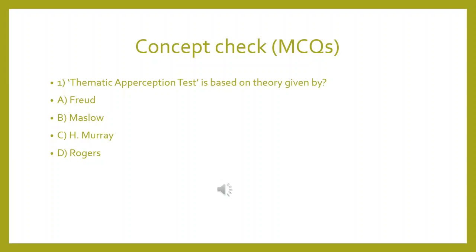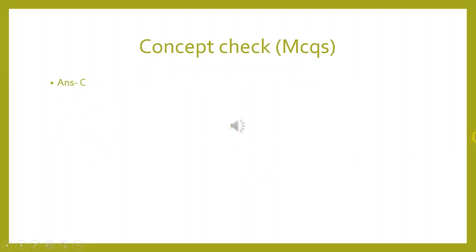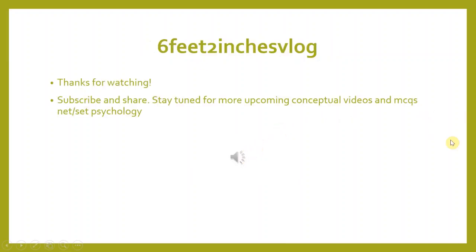Now for the concept check MCQ: 'The Thematic Apperception Test is based on the theory given by — options are: A) Freud, B) Maslow, C) H. Murray, D) Rogers.' Please pause the video, try to answer, and then check the next slide. The correct answer is C, H. Murray. Thanks for watching — please subscribe, share the video with friends, and stay tuned for upcoming conceptual videos related to NET JRF, SET psychology, and weekly MCQ videos.